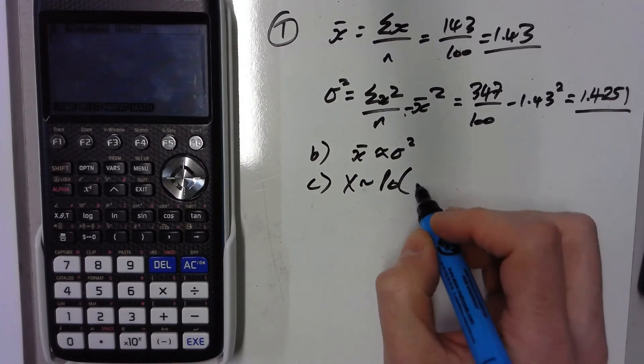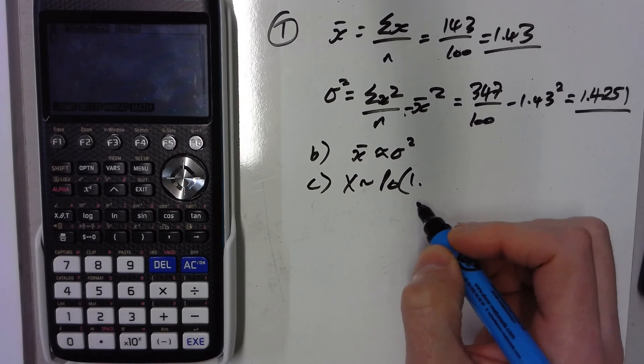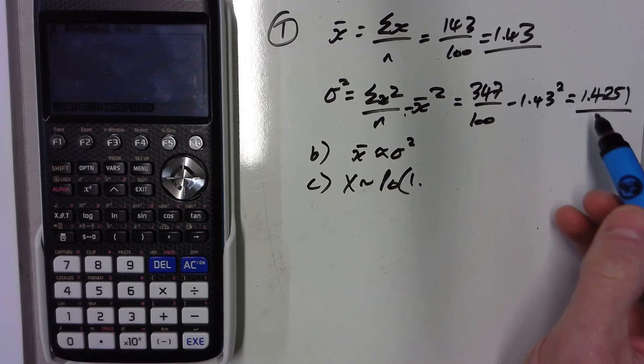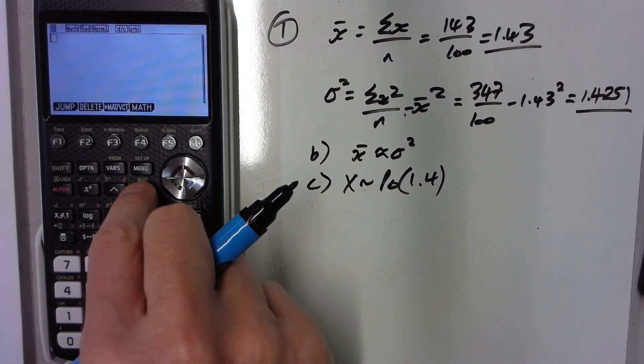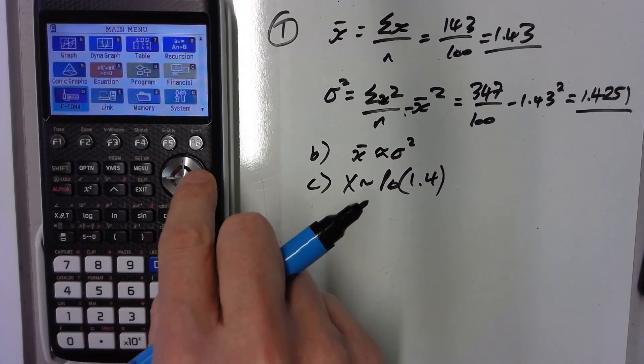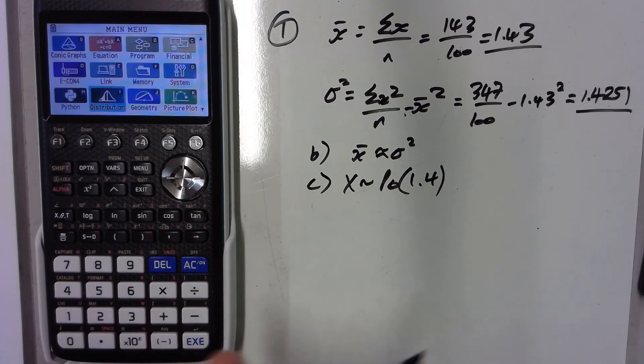What sort of Poisson should we use? I don't know. It says a suitable value for lambda, so I wouldn't mind whether you use 1.43 or 1.4 or something like that. And if we just use a Poisson of 1.4...